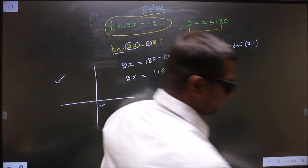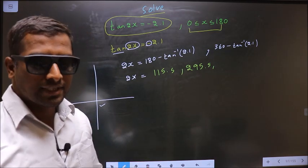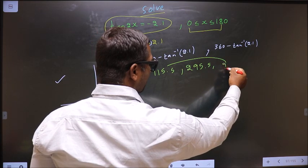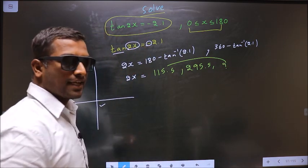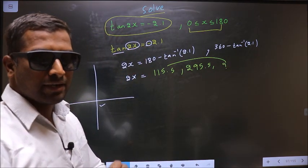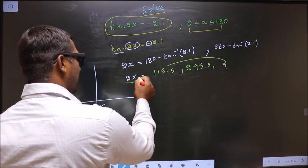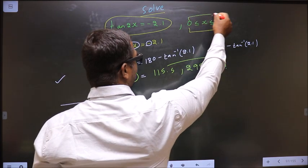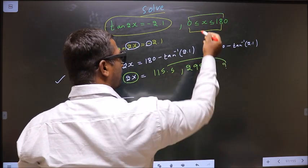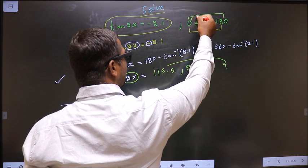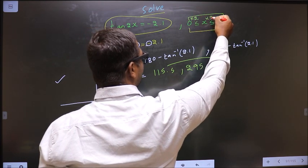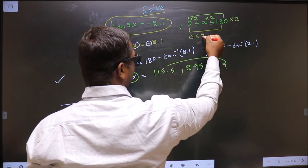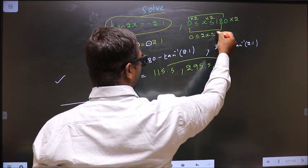Now, how do we decide shall I get another angle here or not? We decide based on this. Here we have 2x. Here x lies in the interval 0 to 180. To get 2x here, you multiply by 2 throughout. So, I get 0 less than or equal to 2x less than or equal to 360.